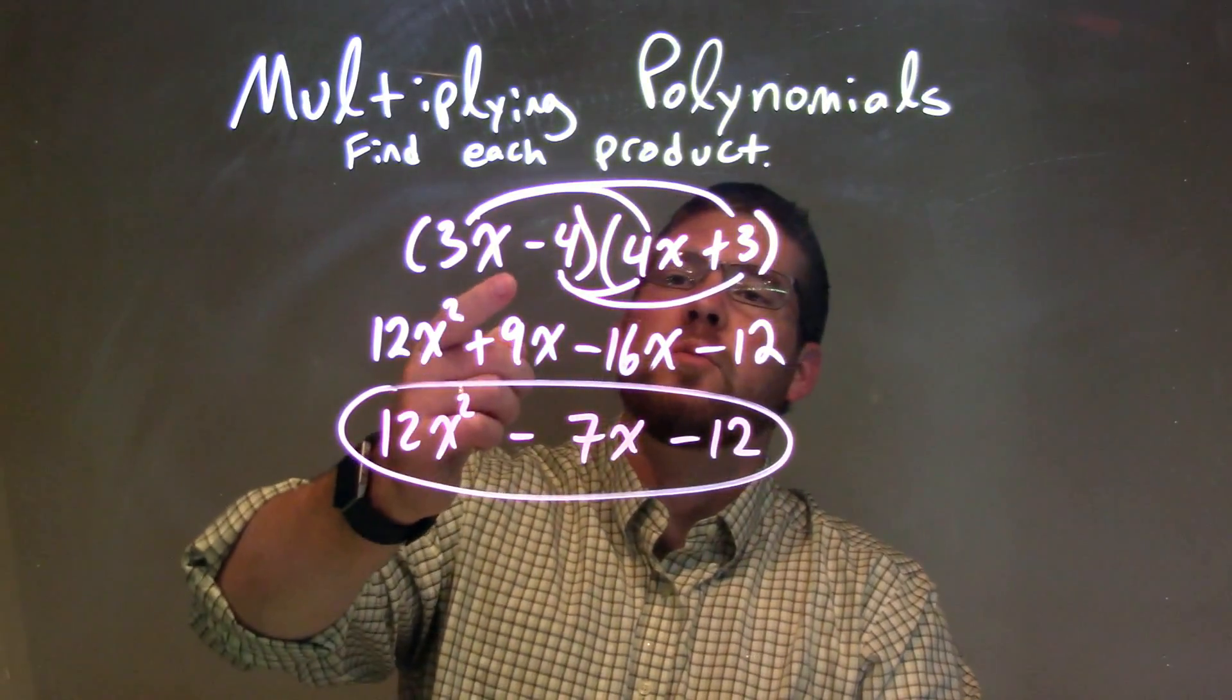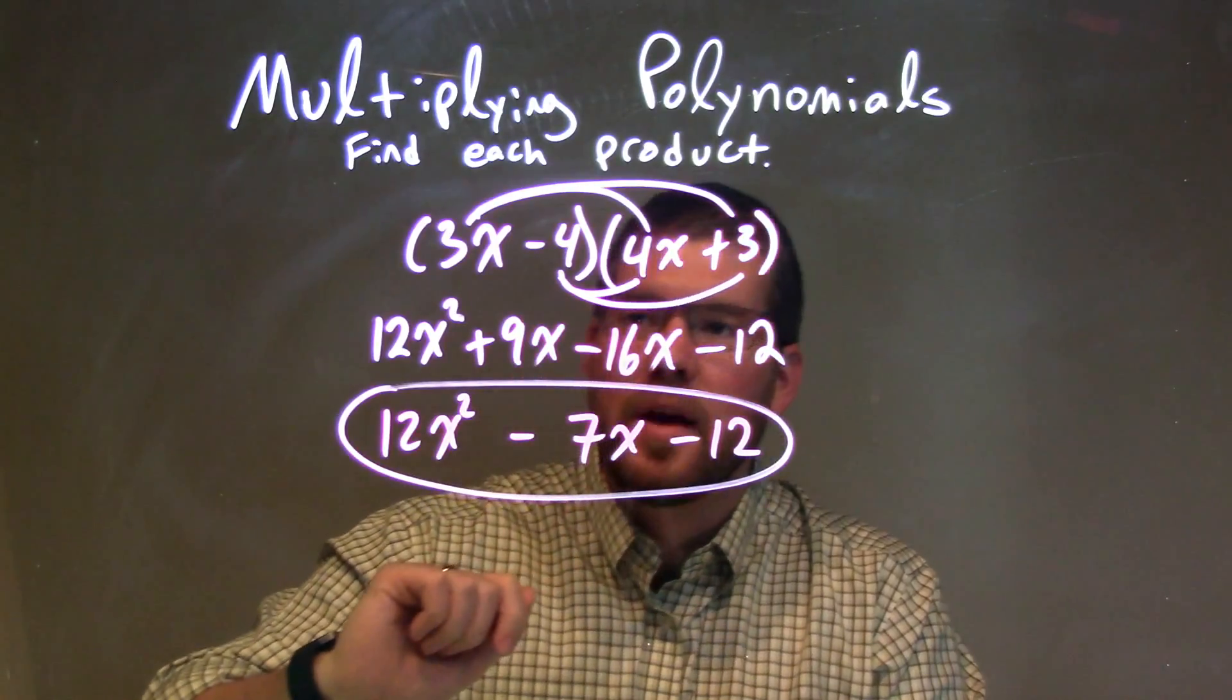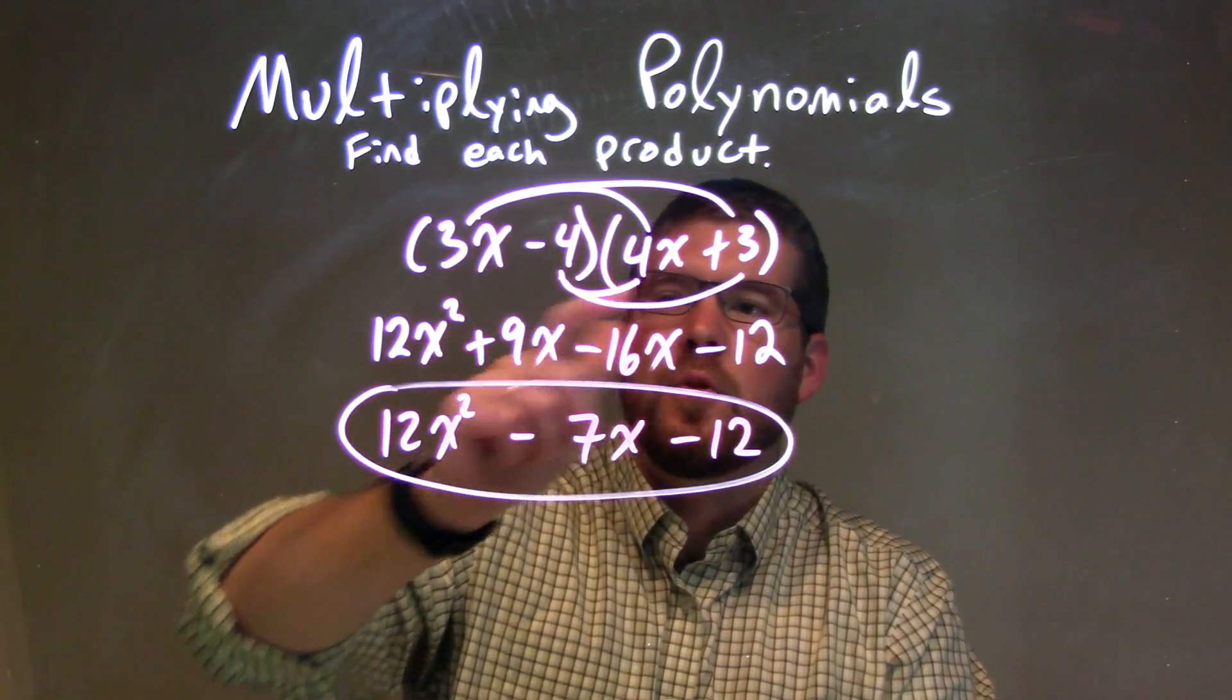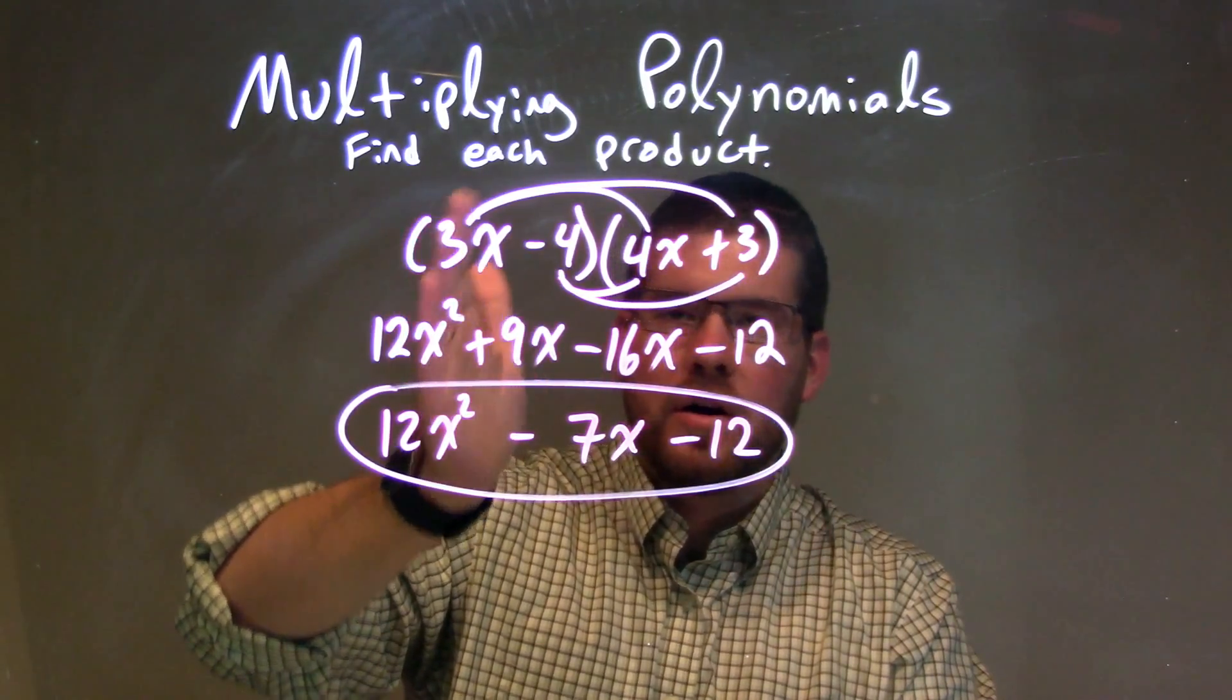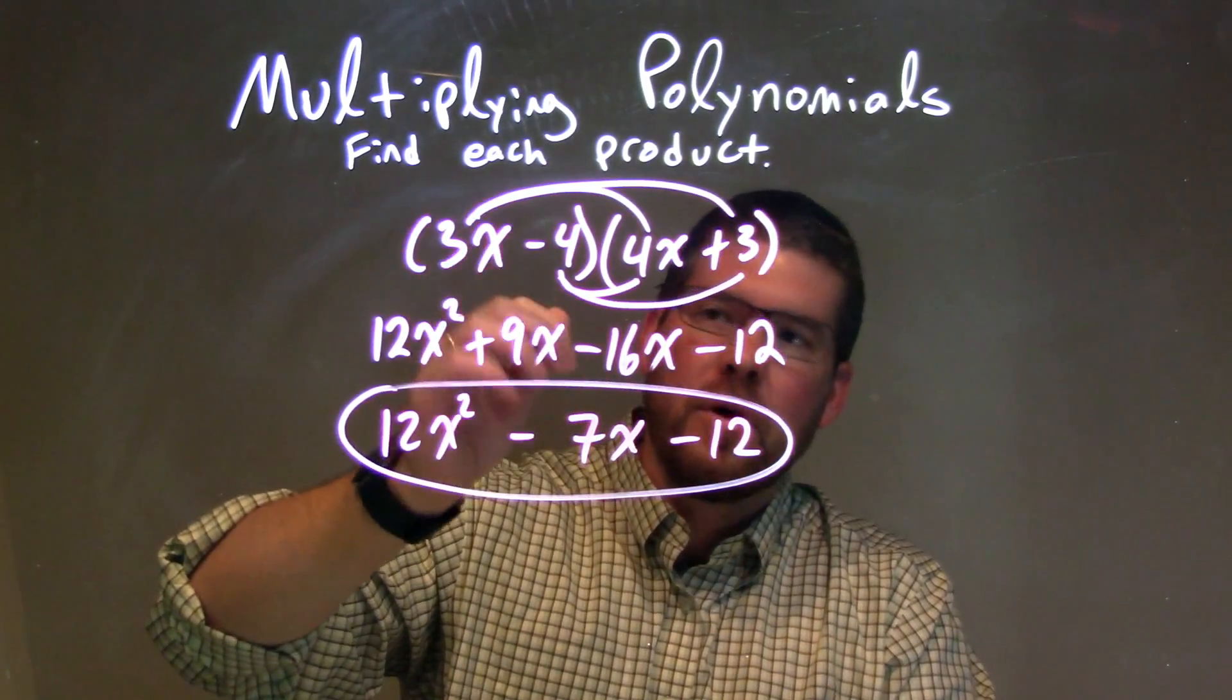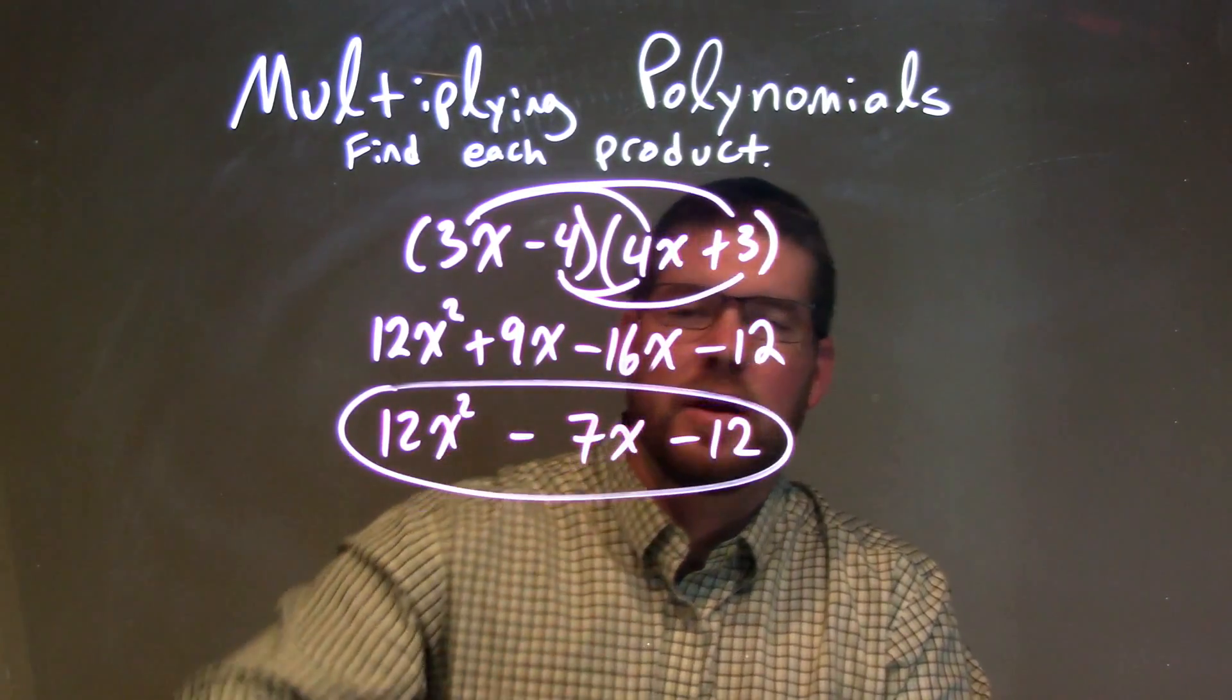So let's recap. We're given 3x minus 4 times 4x plus 3. All parts of our first parenthesis times all parts of our second parenthesis. 3x times 4x was 12x squared, and 3x times 3 was 9x. We use our arcs to make sure we get all parts. So minus 4 times 4x is minus 16x, and minus 4 times 3 is minus 12.